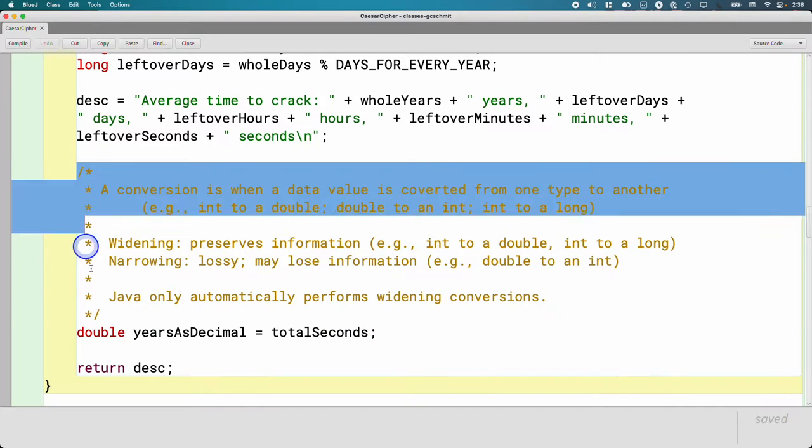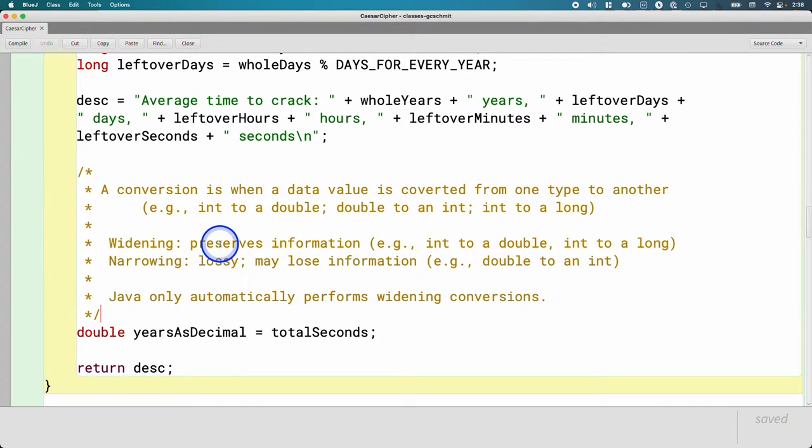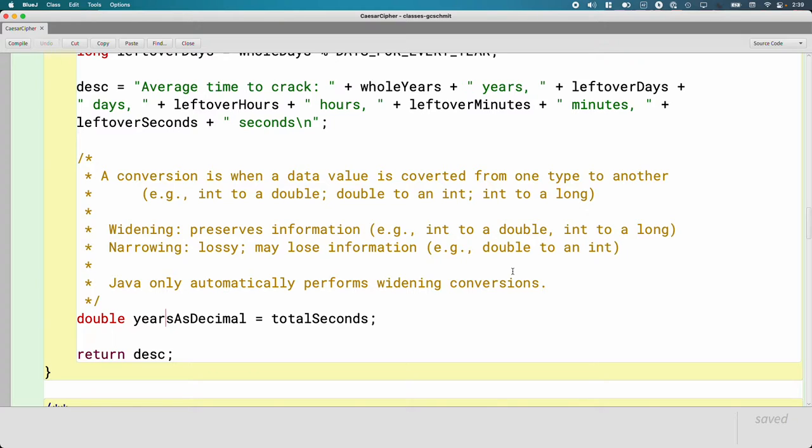But we still need to perform some calculation to actually convert the total seconds to years with a decimal portion. Because we're doing a conversion, we did a few definitions up here last time, which are really important. We talked about the two types of conversions in Java, widening conversion, which always preserves information. So that's when we go from like an int to a double or from an int to a long. Java does widening conversions automatically. We're doing one right here. We're converting total seconds to a double and we define the term narrowing conversion. A narrowing conversion has the potential to lose data. It's a lossy conversion.